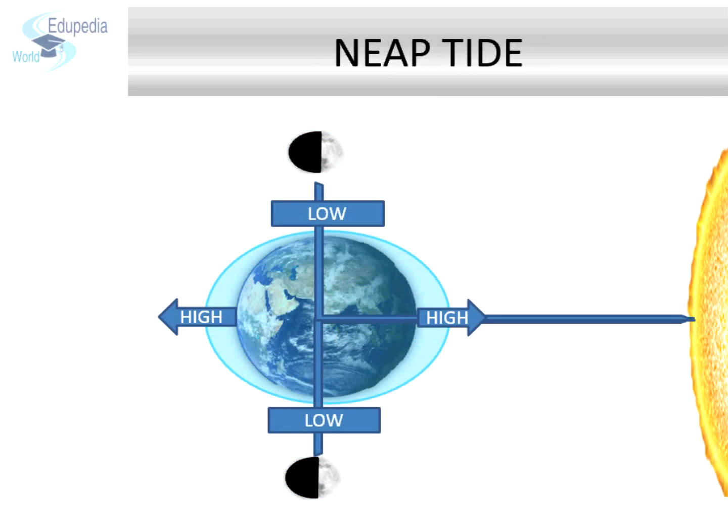Neap Tide. When the Moon, the Earth and the Sun form a right angle, the gravitational pull of the moon and sun counteract the effect of each other and we experience a low rise of water at high tide. These are known as neap tides.